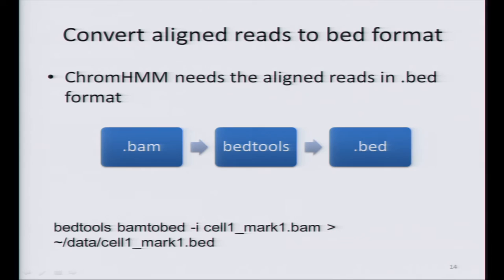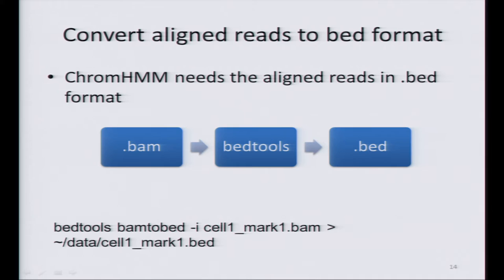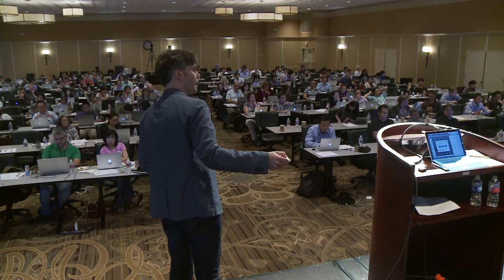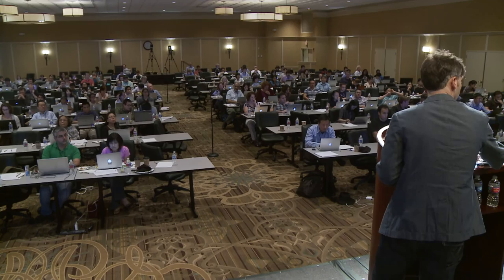This BAM-to-BED conversion step is really important and many people get stuck here because ChromHMM doesn't accept BAM files. To convert from BAM to BED, you need to run a BEDTools command for each of your BAM files. For example, if you have a file called cell1_mark1.bam, you run: bedtools bamtobed, specify the input BAM file, and redirect the output to the output BED file. Remember where you are putting all these BED files, and please put them all in the same folder, because ChromHMM needs all the files in the same folder.